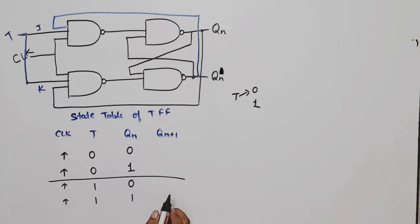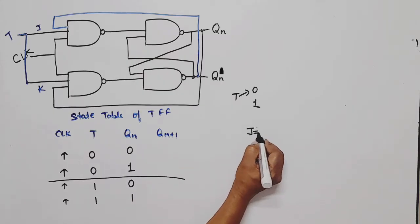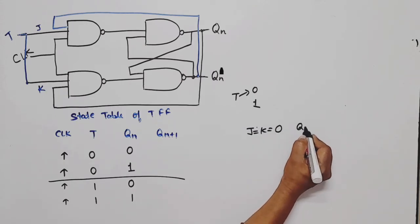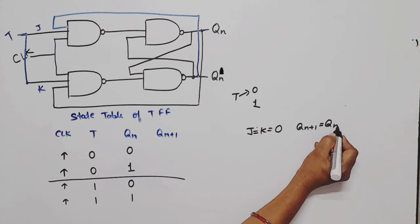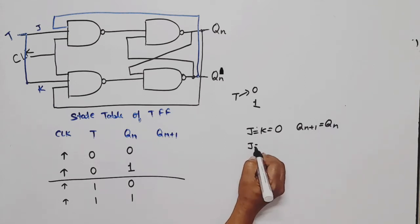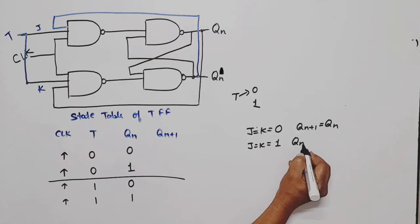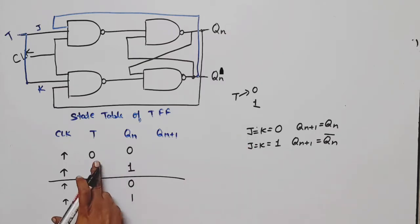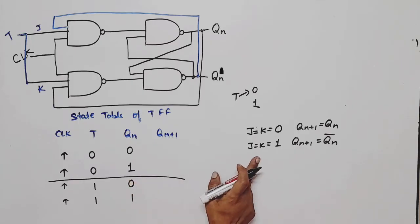If you remember, in case of JK flip-flop, when J and K both were equal to zero, QN plus one will be equal to QN. And when J and K both equal to one, the next state was the complement of present state. So when T is zero, meaning J and K are both zero, next state will be the present state. And when T is equal to one, meaning J and K are both one, next state will be the complement of present state.